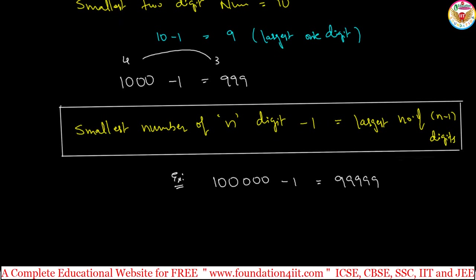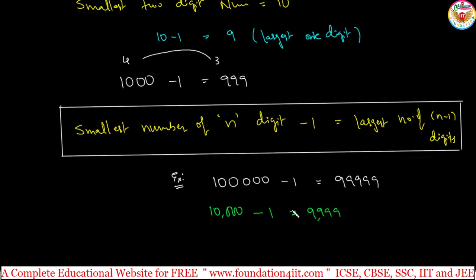Anything follows the same pattern — just 10,000 minus 1. In 10,000, counting the digits: 1, 2, 3, 4, 5 digits. So subtracting 1 gives the largest 4-digit number, that is 9999. 10,000 minus 1 is 9999. This is the subtraction pattern. This is a chapter on place value — these are the basic concepts.